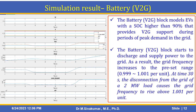The next graph can be obtained from the interactive SimScape Result Explorer. Here we can see the battery block — the V2G block, which models EVs with a state of charge higher than 90% that provides V2G support during periods of peak demand in the grid. The V2G battery block starts to discharge and supplies power to the grid.